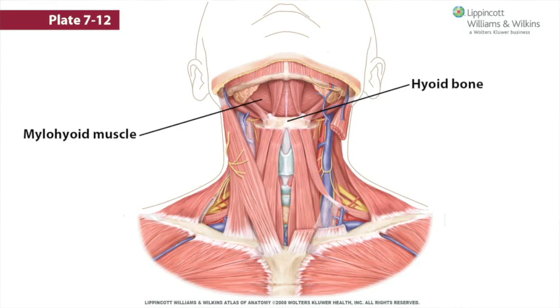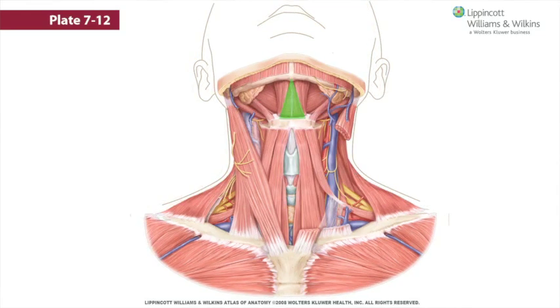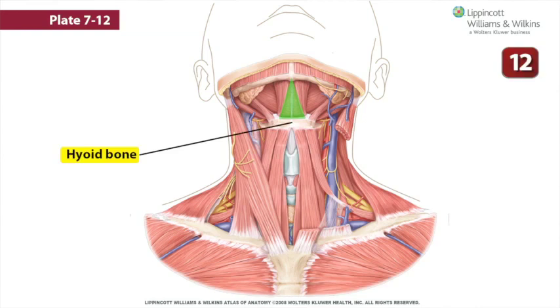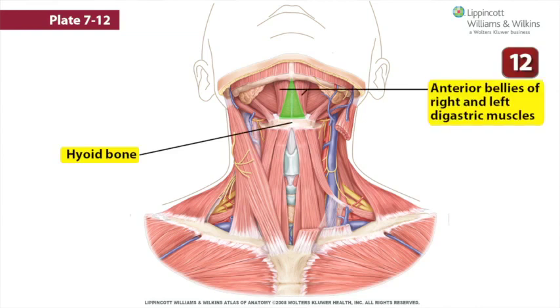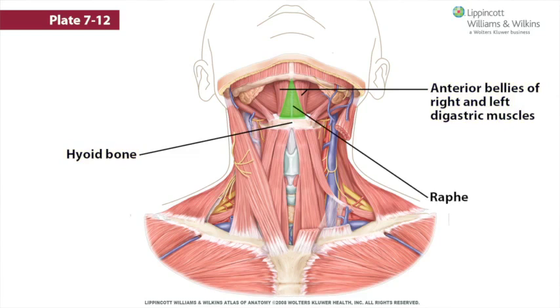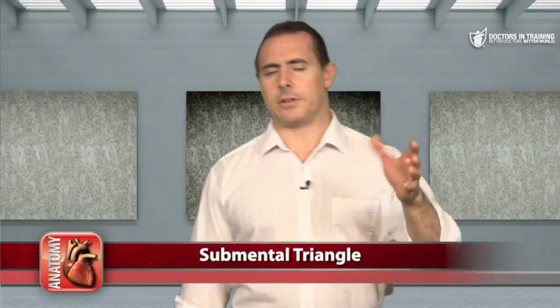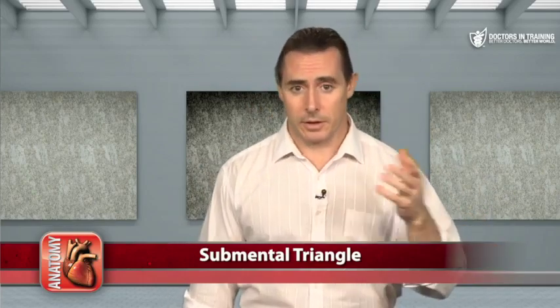The final and least interesting subtriangle of the anterior triangle is the submental triangle. Its borders are the hyoid bone and the anterior bellies of the right and left digastric muscles. Most consider it to be an unpaired triangle, though some divide it at the raphe connecting the right and left mylohyoid muscles into bilateral triangles. The floor is the mylohyoid muscle, with no other structures of note occupying it. It gets its name from the fact that it is inferior to the mental protuberance of the mandible.